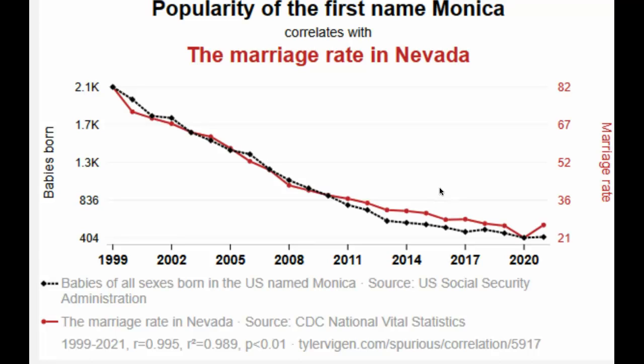Correlations can happen just because of things occurring at the same time. Also important: just because the lines are going down doesn't mean it's negative. If the lines are heading in the same direction — be it up or down — that means there's a positive correlation. If one goes up, the other one goes up. If one goes down, the other one goes down — that's a positive correlation.